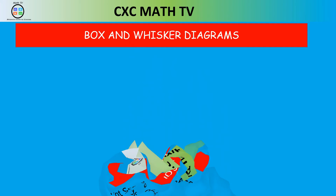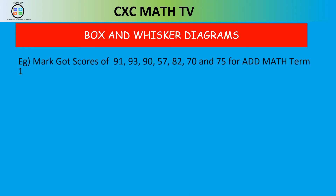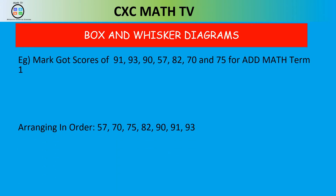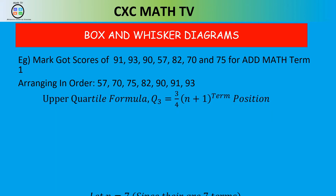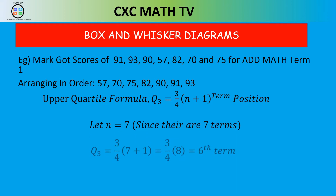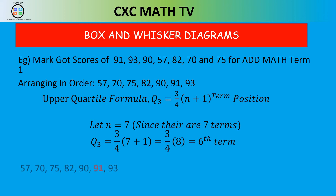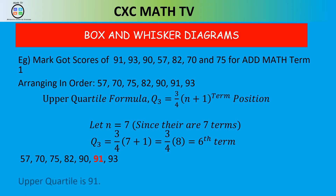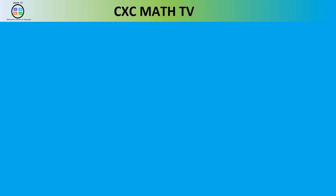Another way to find the upper quartile is the formula: position = ¾ × (n + 1). With n = 7 scores, that's ¾ × 8 = 6, so the upper quartile is the 6th term in ascending order. The 6th term is 91, confirming the upper quartile is 91.